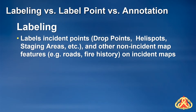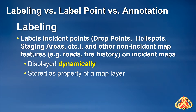The first technique we will discuss is dynamic labeling. Dynamic labeling is used primarily for labeling incident point features like drop points and helispots, as well as labeling non-incident features such as roads and fire history. When using dynamic labeling, map labels are displayed dynamically, meaning they will not need to be added or removed each time a feature is added or removed. Labeling is stored as a property of a layer within a map layout.